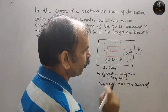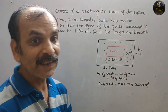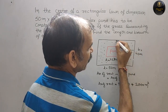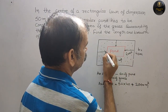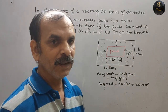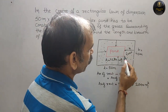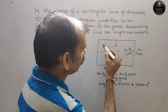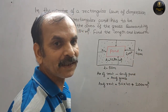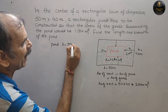Since the pond is in the center, the distance on each side is equal. Suppose this uniform border distance is x. So the length of the pond becomes 50 minus 2x, because there is x on each side, making 2x total subtracted from 50. Pond length = 50 − 2x.